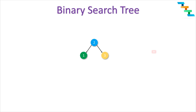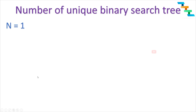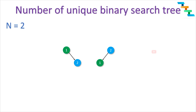Now we will see about what is a unique binary search tree. If the value of n is 1, that means you are given with only one node — in this case we can form only one unique binary search tree. If you are given the value 2, you have two nodes 1 and 2. We can have 1 as the root node and 2 as the right child, or 2 as the root node with 1 as the left child. So for n equals 2 there can be 2 unique binary search trees.